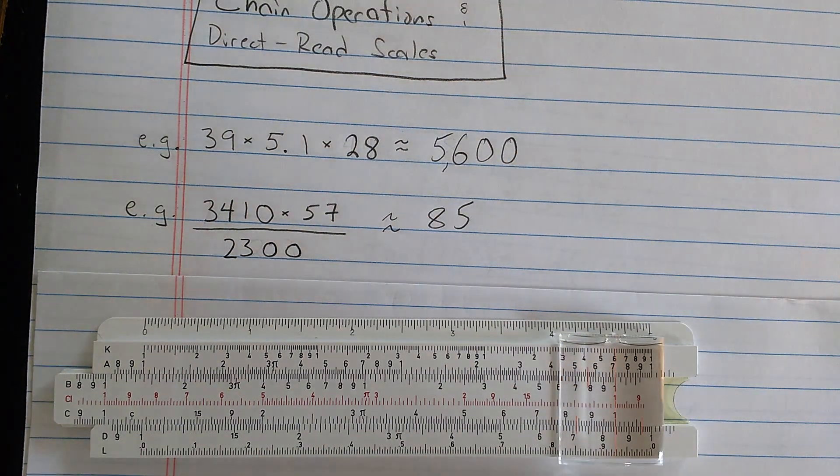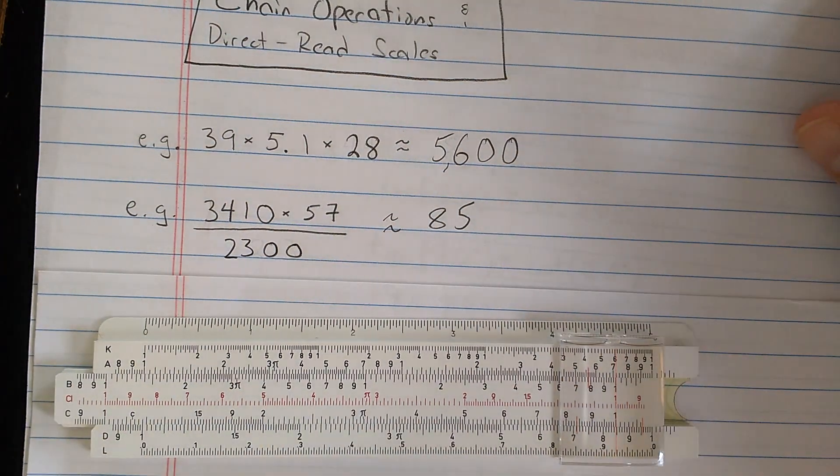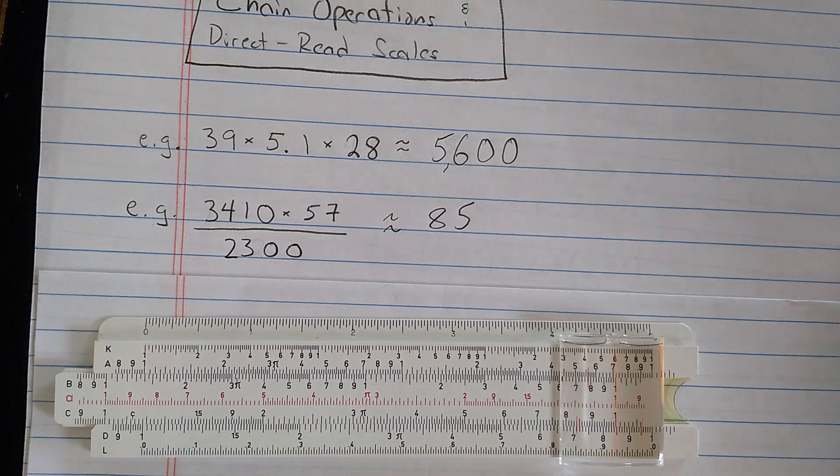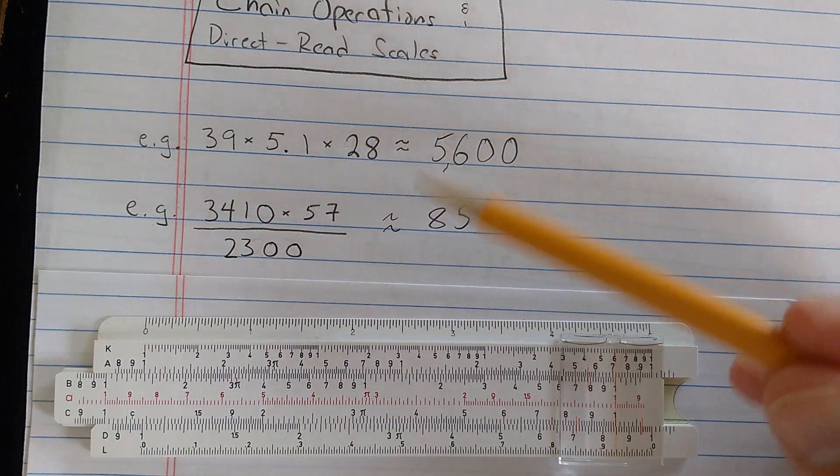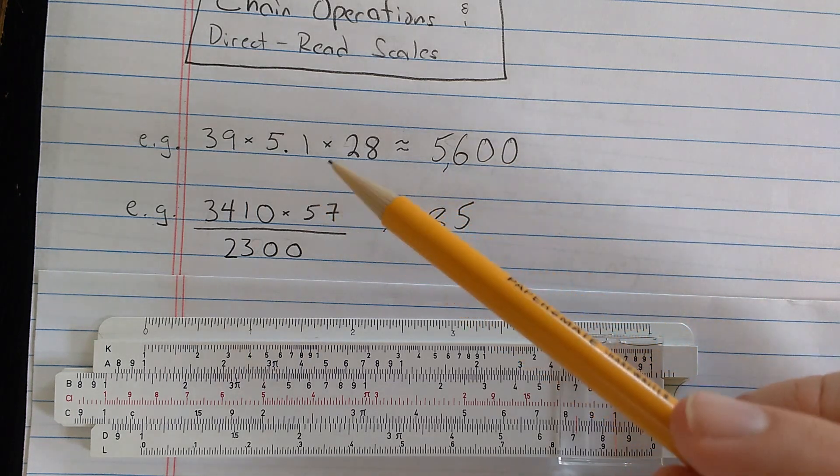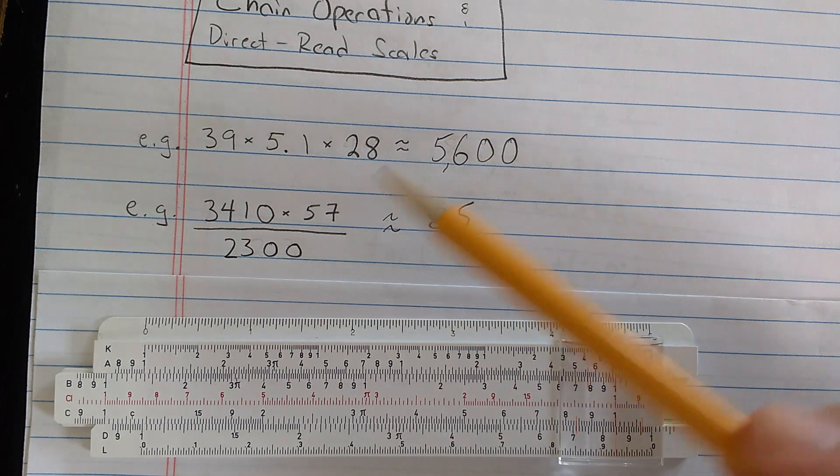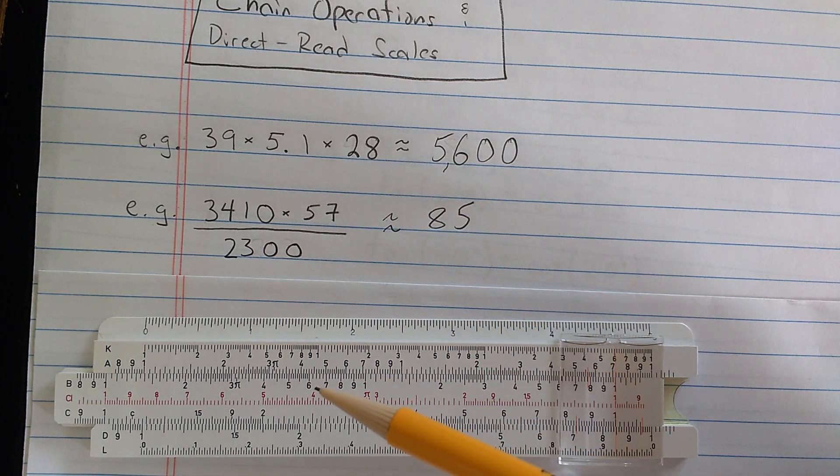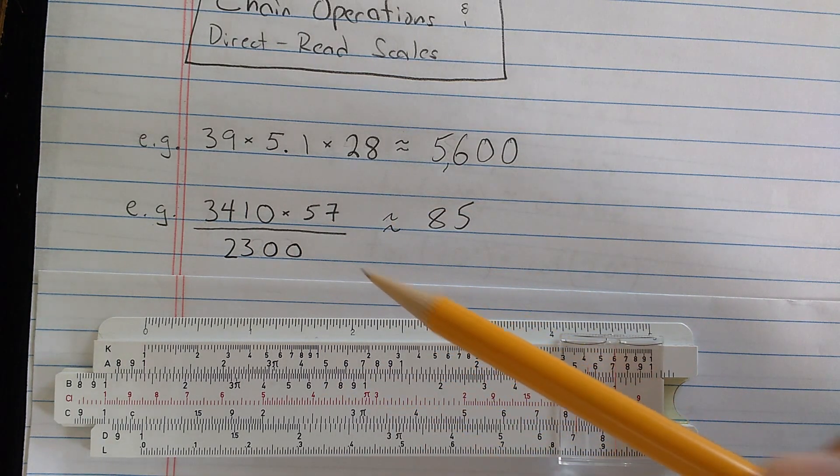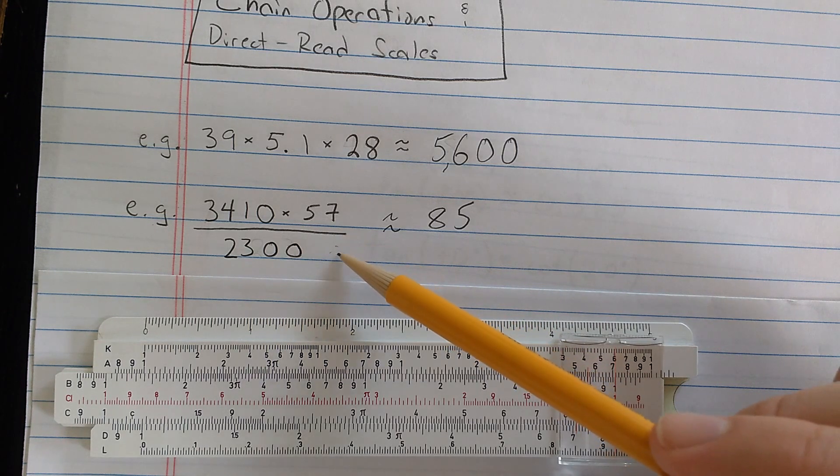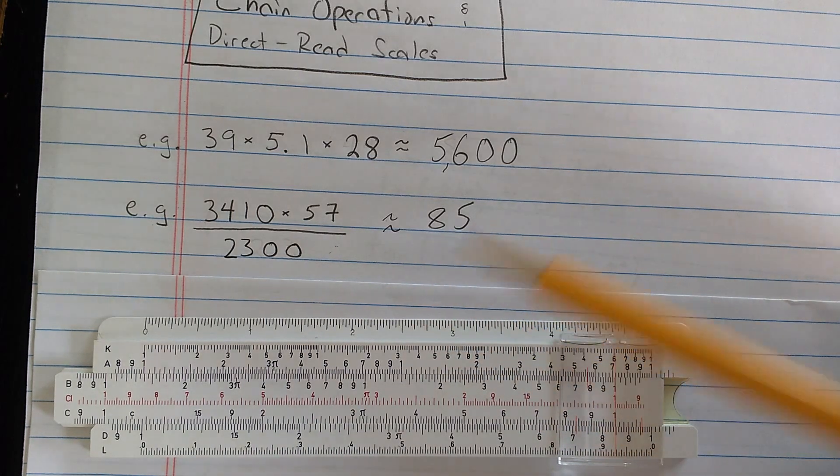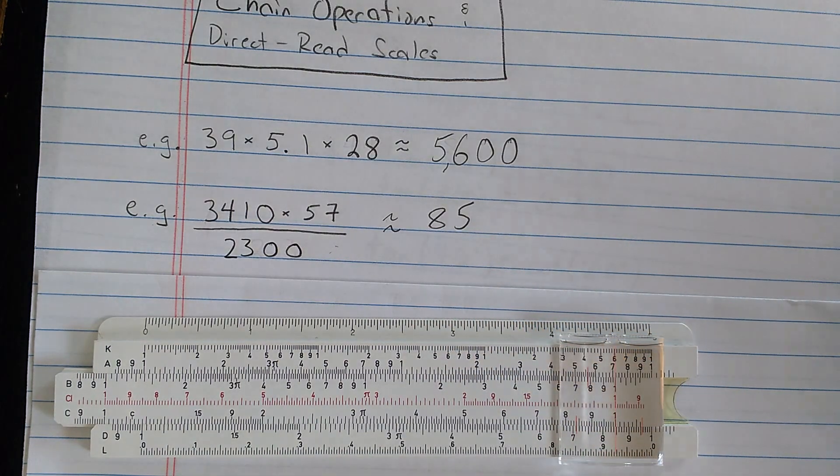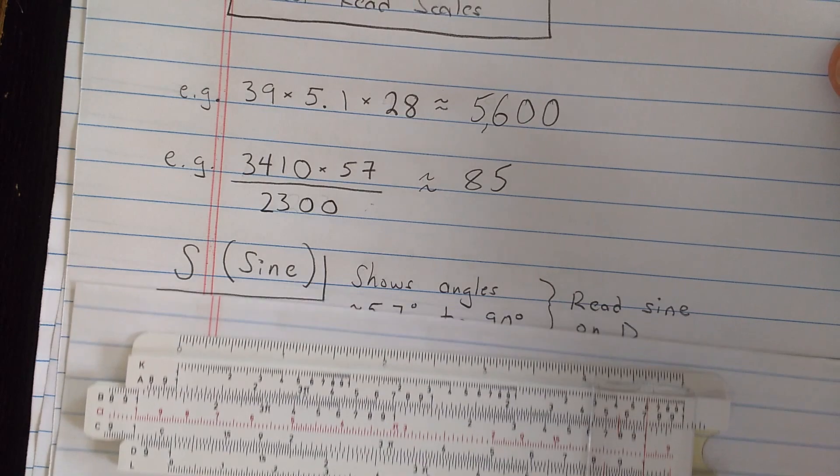Of course, you lose accuracy as you go every time you have to set the slide. So on more complicated slide rules, maybe I'll do a future video. You can do all calculations like this, a combination of two multiplications or divisions using only one setting of the slide. But fancier slide rules have additional scales which help you do that for accuracy.